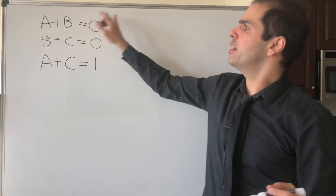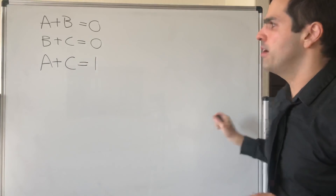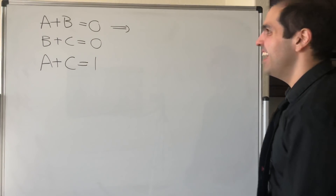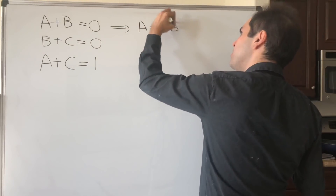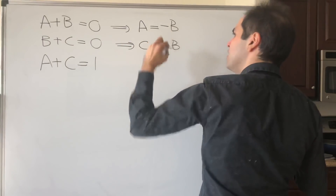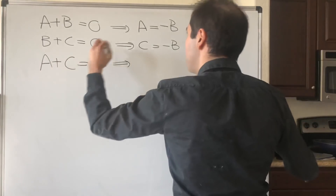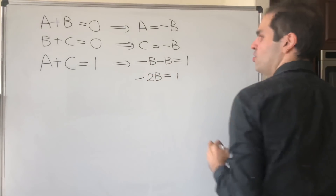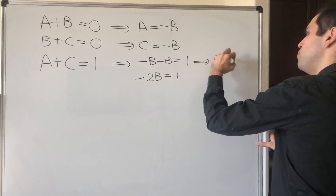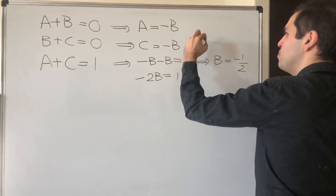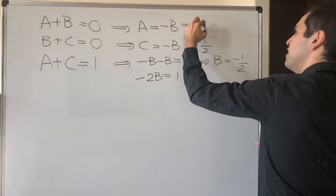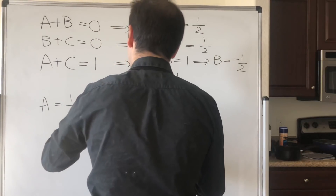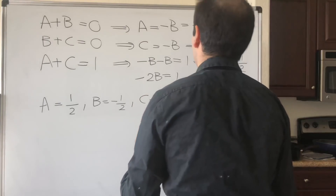So we get a system of three equations: A plus B equals zero, B plus C equals zero, and A plus C equals one. You can solve for A in terms of B: A is minus B, and C is also minus B. Then A plus C becomes minus B minus B, which equals one, so minus 2B equals one — to be or not to be — and so B equals minus one half, C is minus B so that's one half, and A is minus B so that's one half.